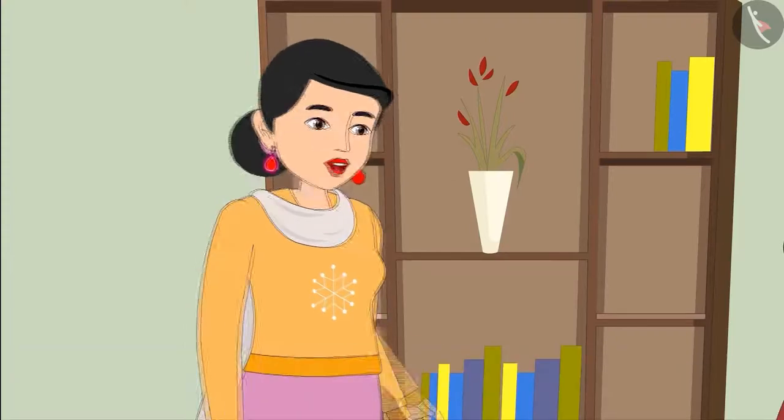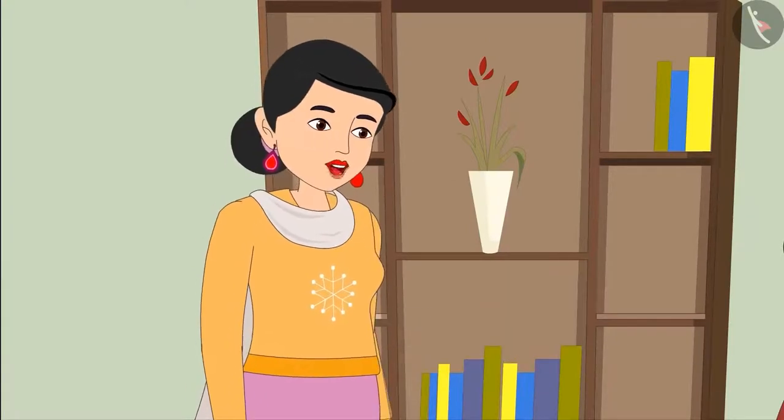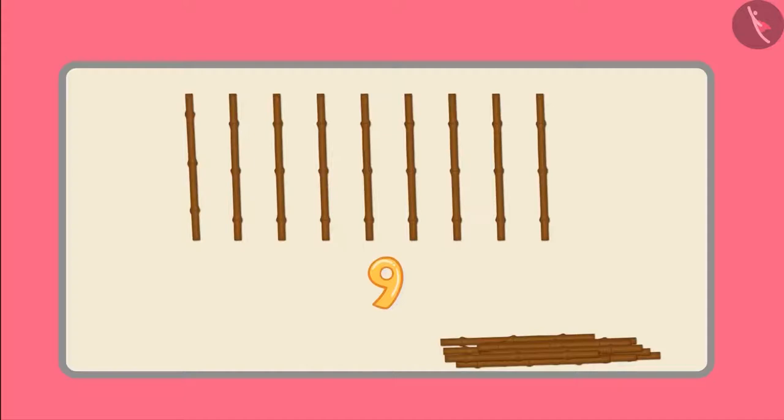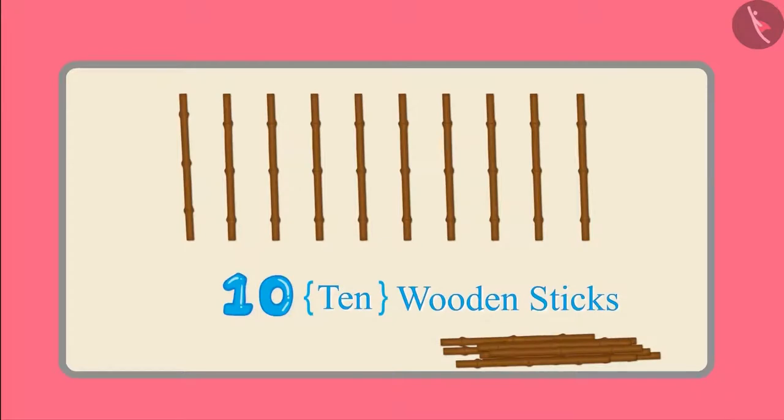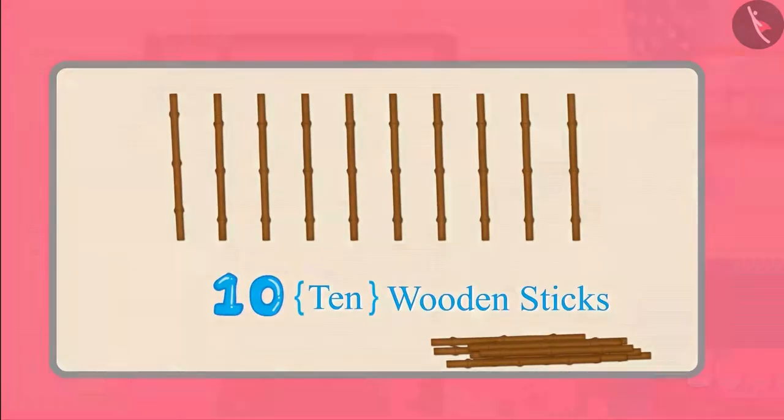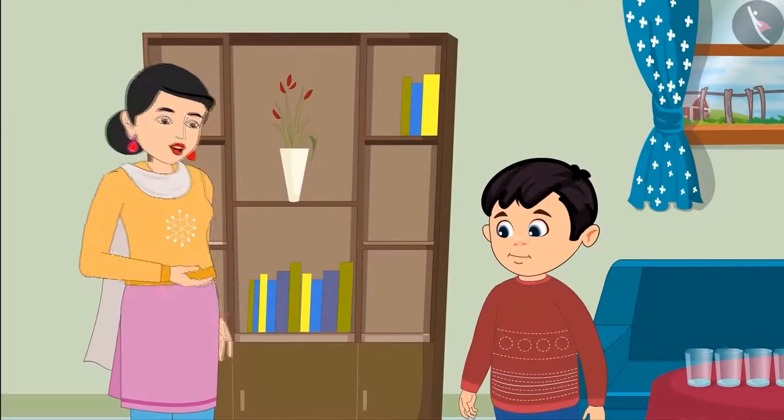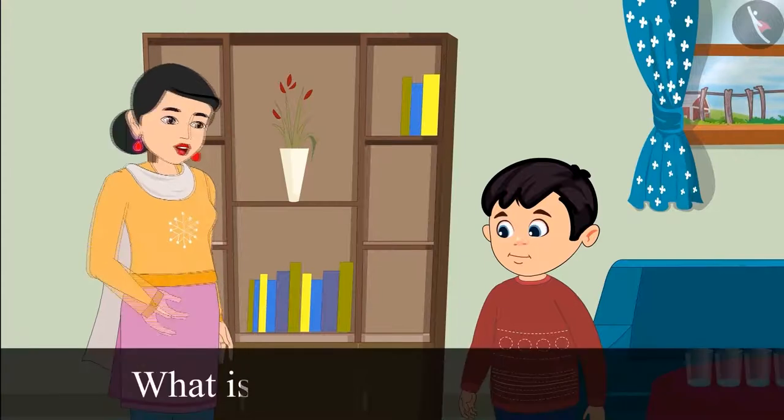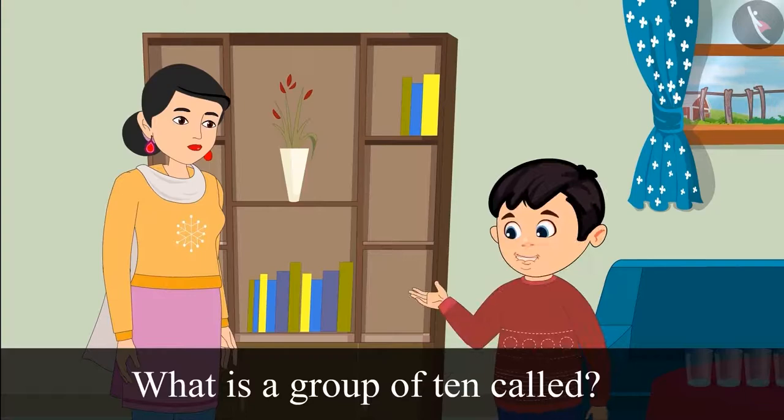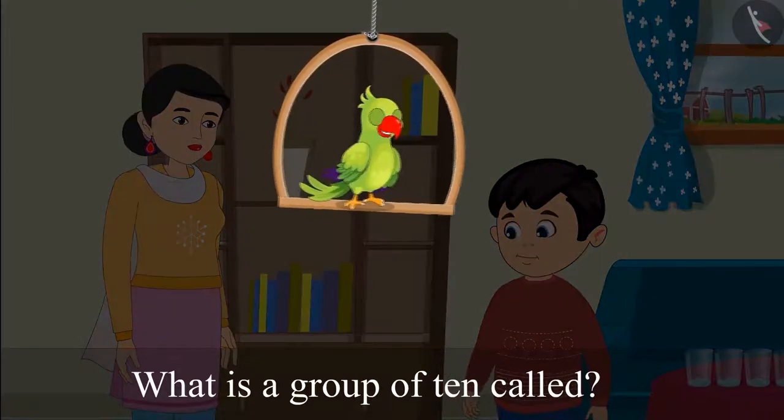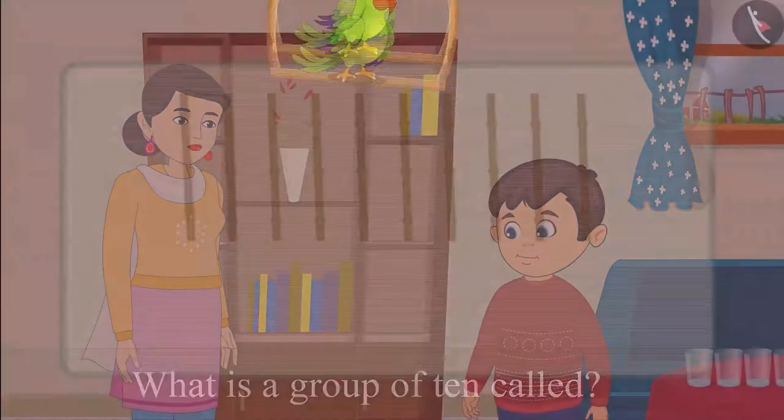Don't worry, Chotu. I will tell you how to count beyond 9. If we add one more wooden stick to 9 wooden sticks, then we get 10 wooden sticks. I see. Do you know, Chotu, that what is any group of 10 called? No, mummy. What do we call it? Kids, do you know what is a group of 10 called? Come on, let us see.